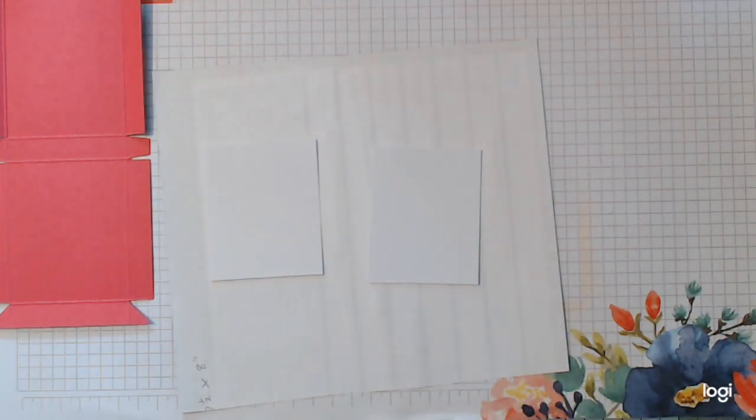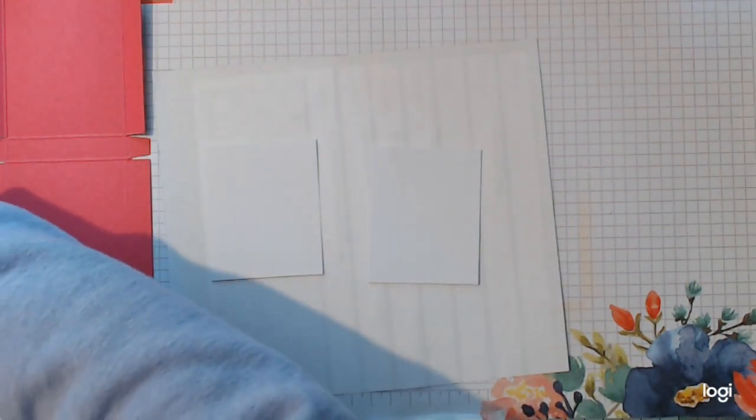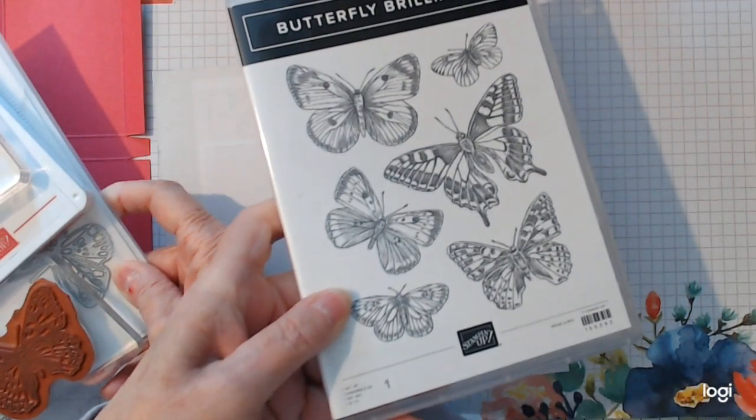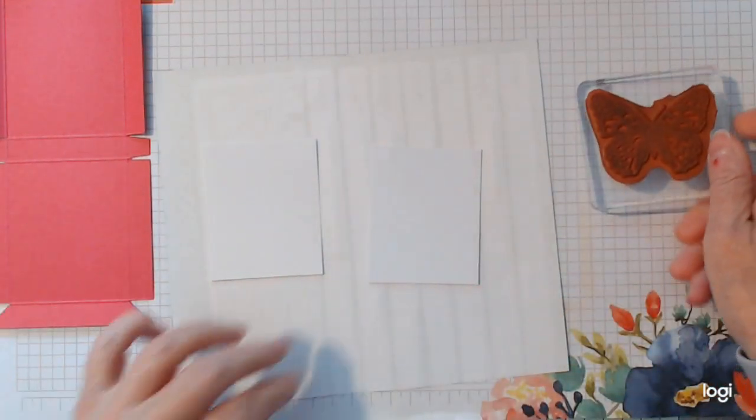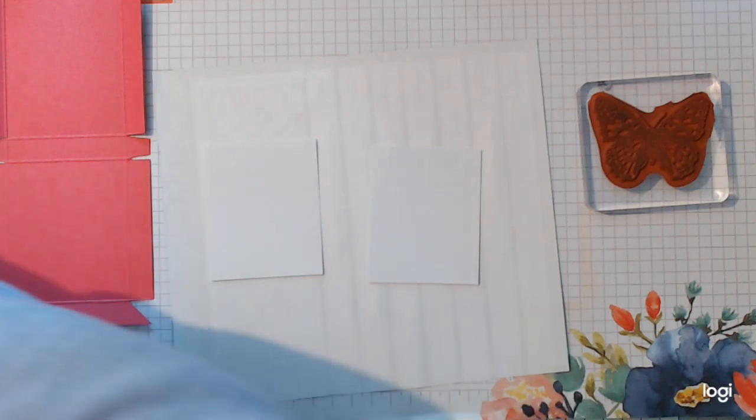There's going to be nothing else really on the front of it. And the set that I used is called Butterfly Brilliance. This one here. I'm going to use one of the butterflies to sort of stamp and say. Just to leave a wee like marking around the edges.